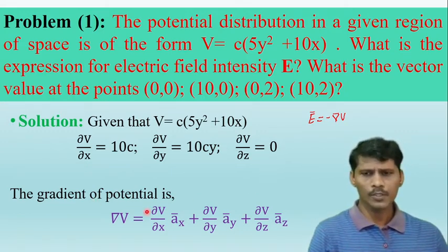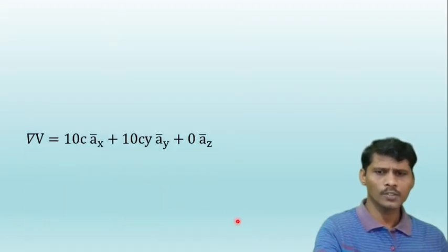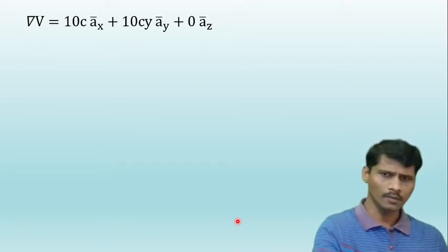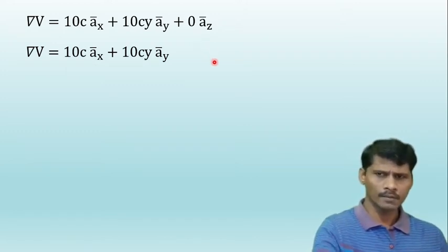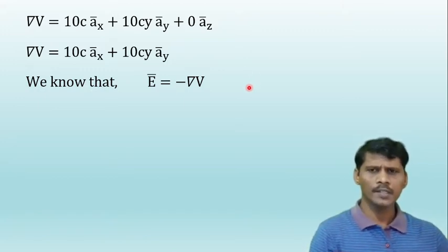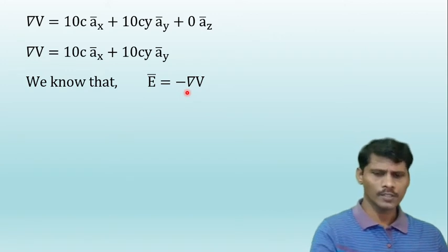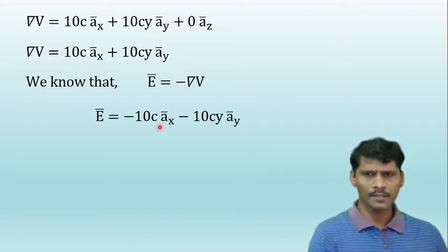The gradient of the potential is ∇V = (∂V/∂x)·ax + (∂V/∂y)·ay + (∂V/∂z)·az. Substituting the values, ∇V = 10c·ax + 10cy·ay. Therefore, the electric field intensity E = −∇V = −10c·ax − 10cy·ay.